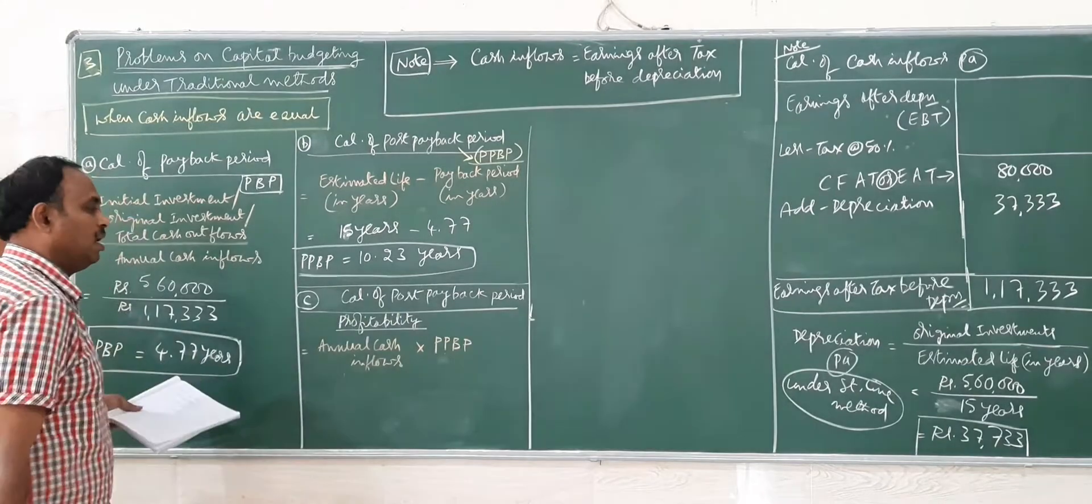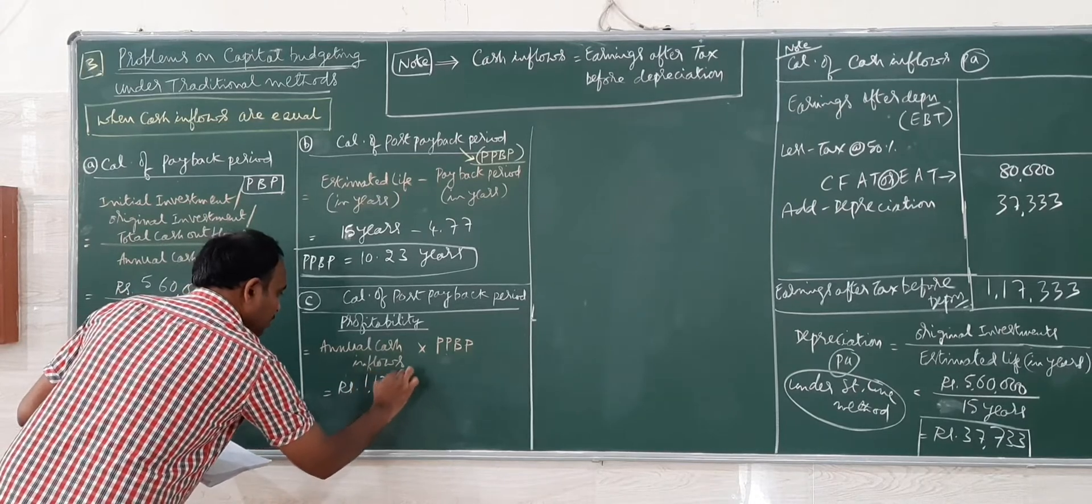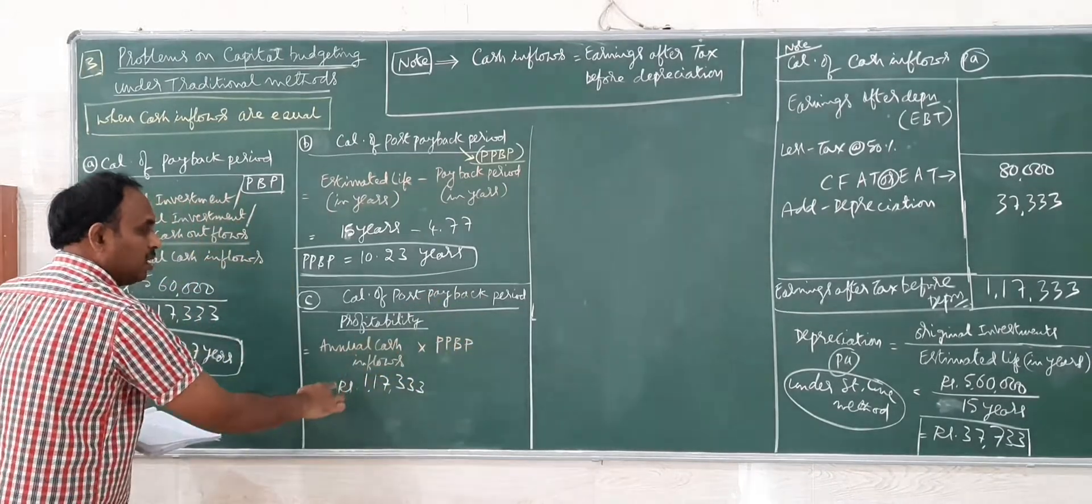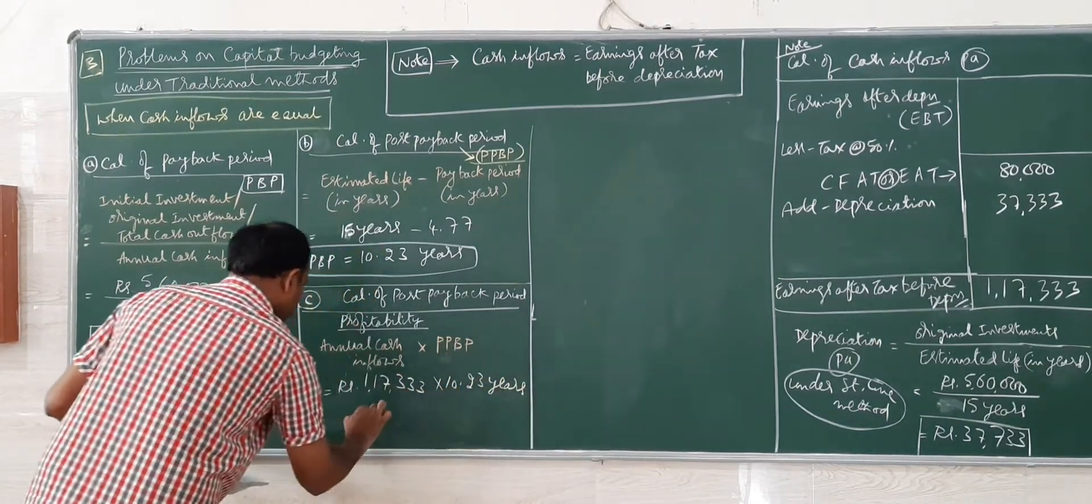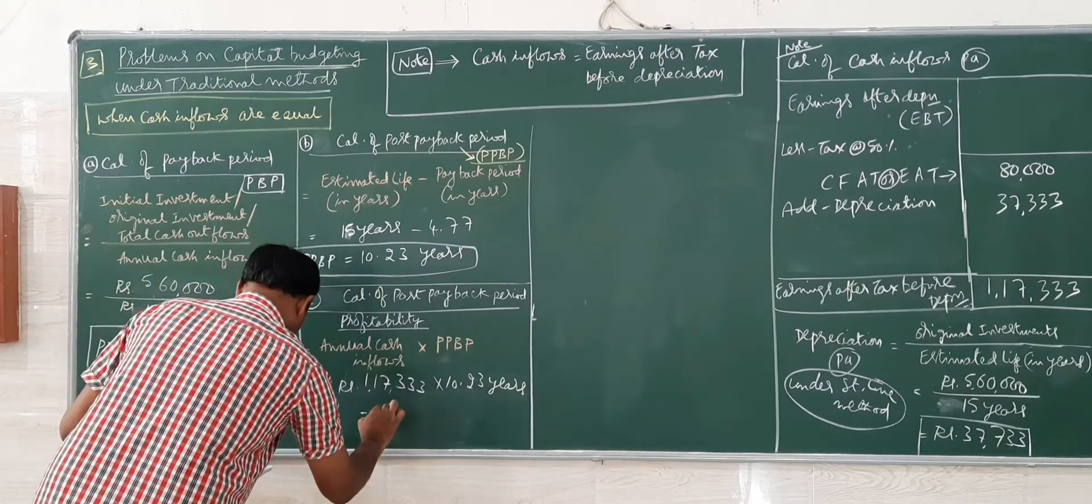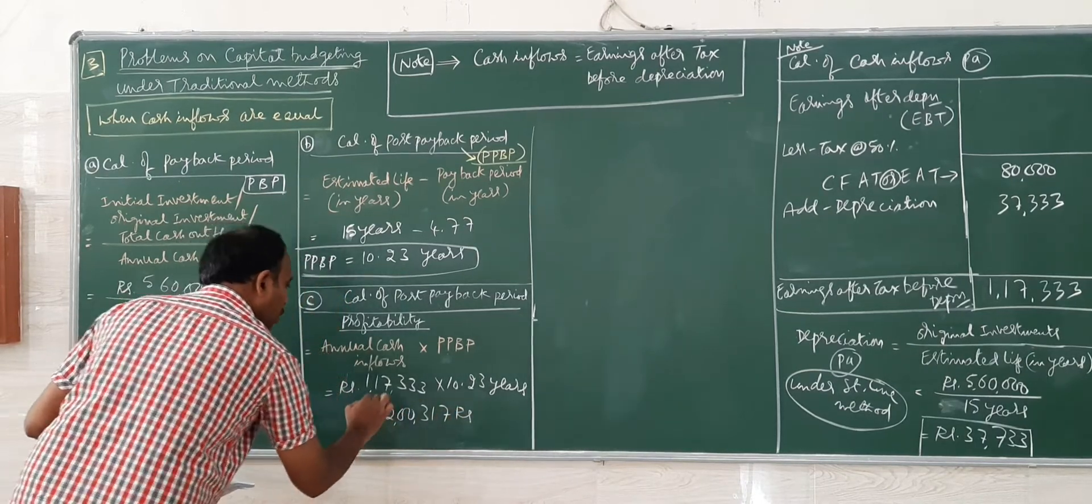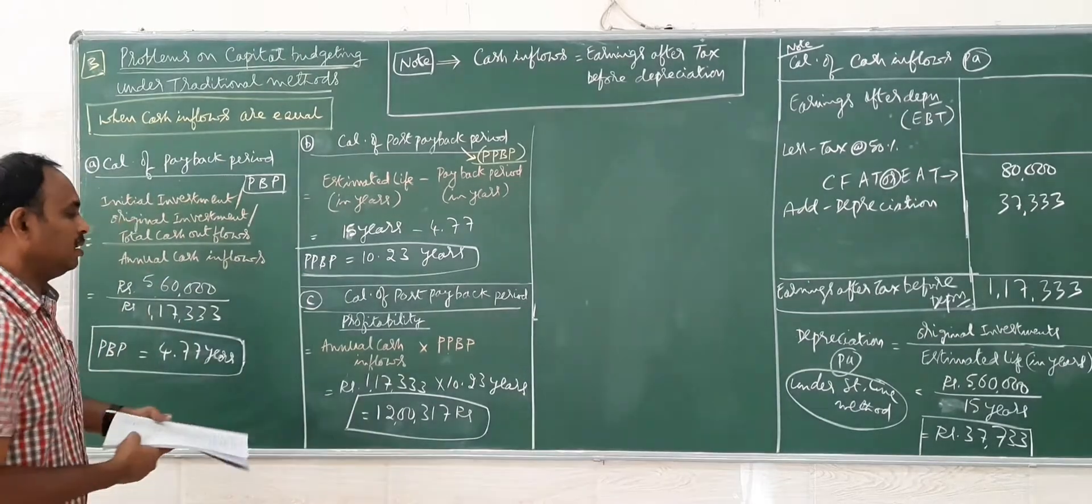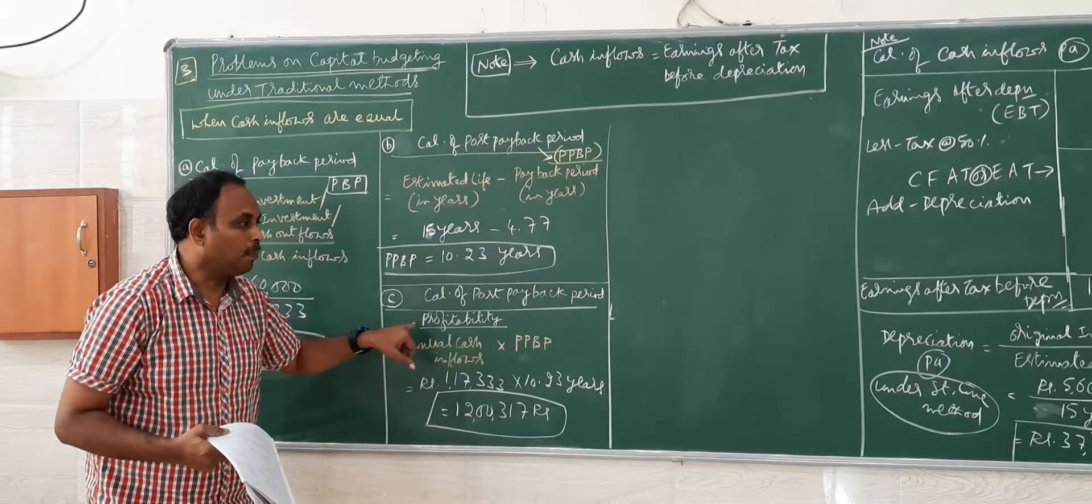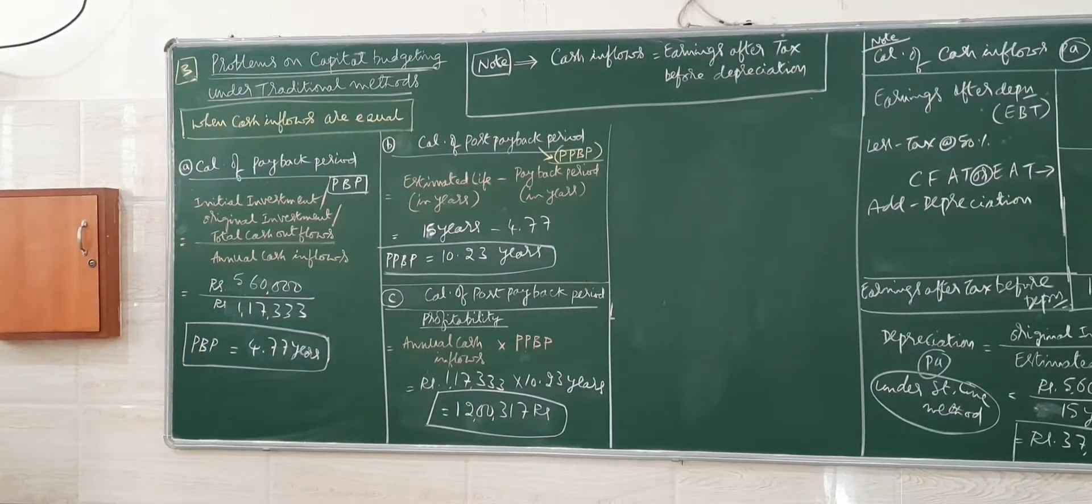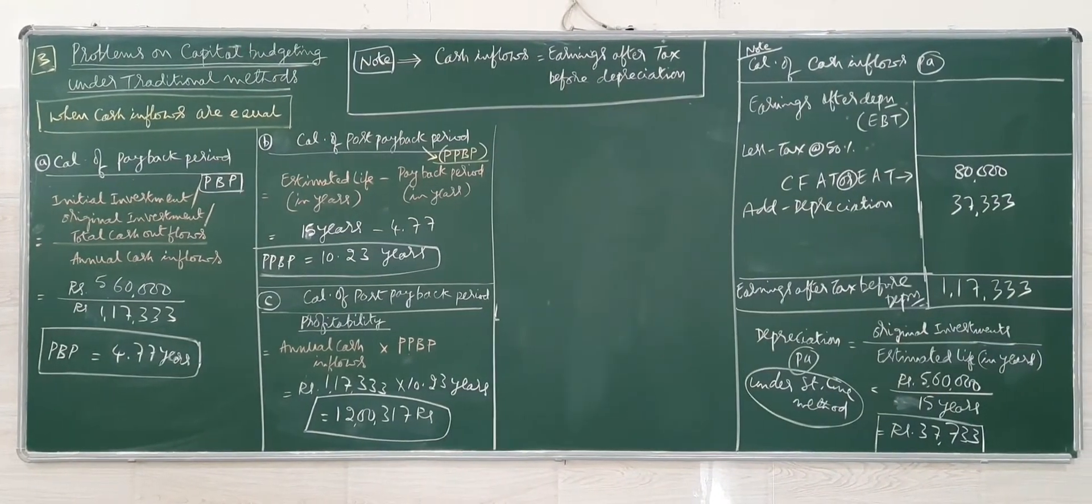What is the profitability in 10.23 years? Annual cash inflow Rs.1,17,333 multiplied by 10.23 years comes to Rs.12,00,317. So post-payback period profitability is Rs.12,00,317.